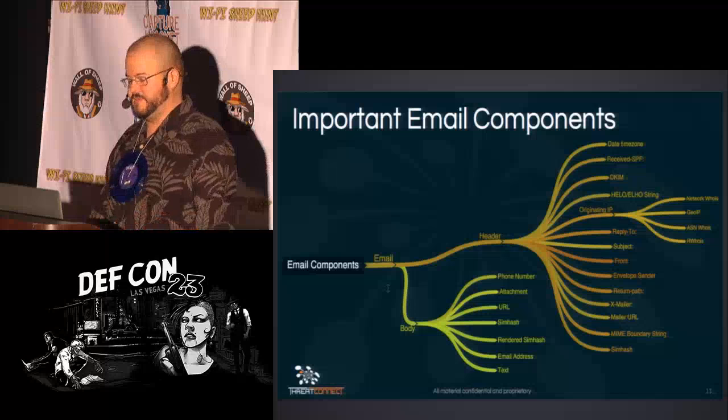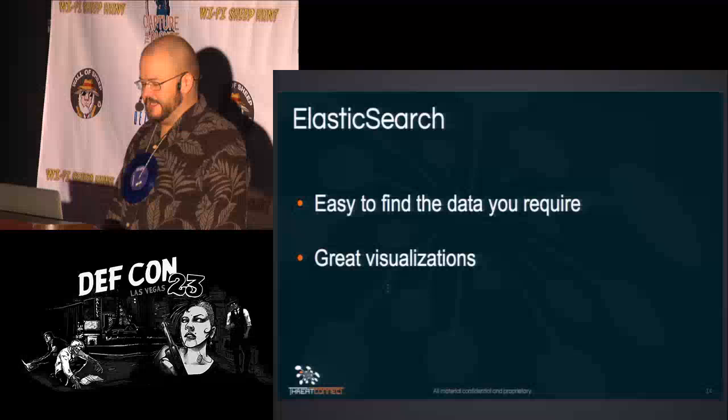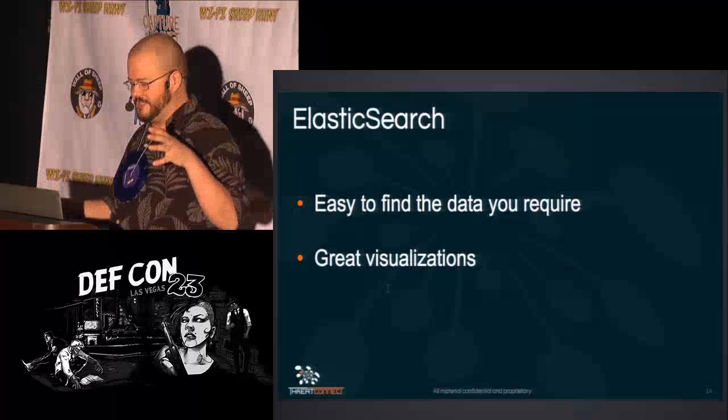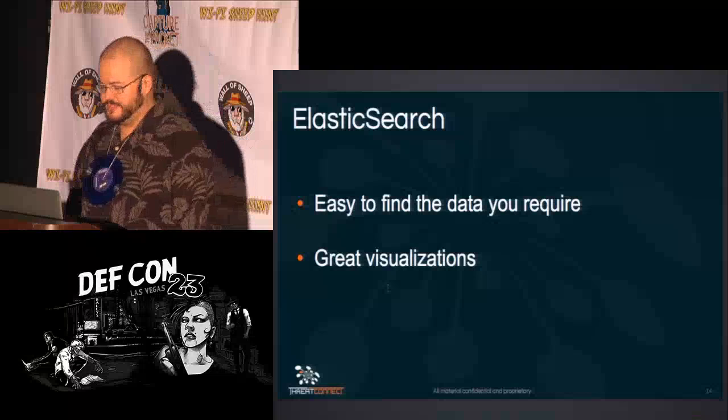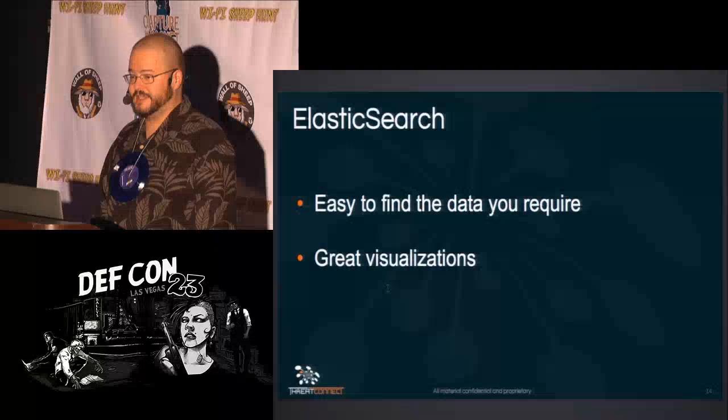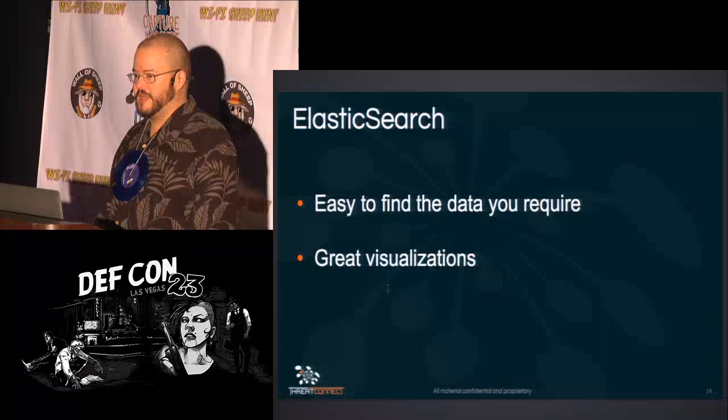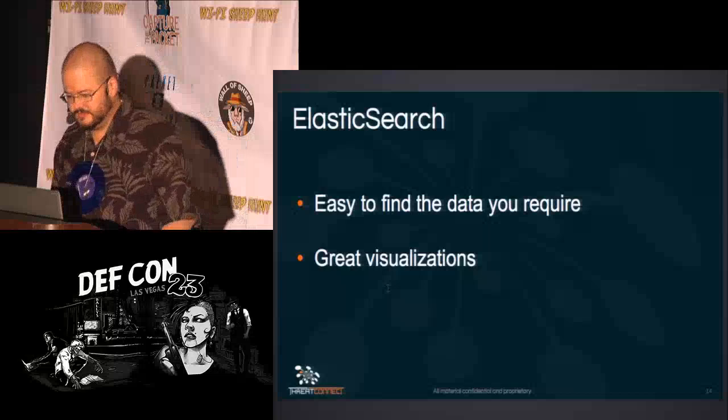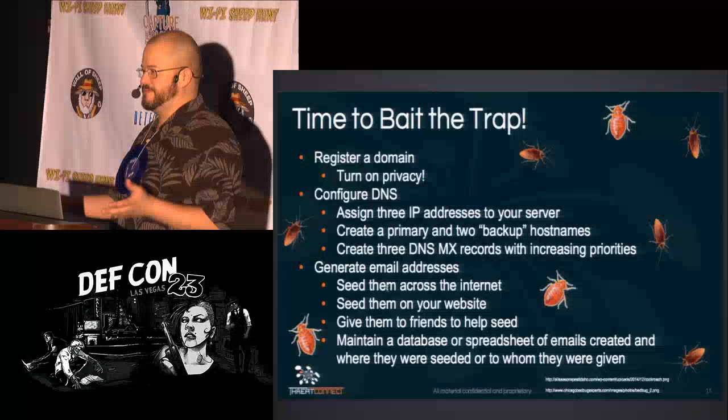After generating the JSON blob for the header, put it into Elasticsearch — create an index, set the type. I call it 'email' as the type and 'emails' as the index. Then you can use Kibana to do visualizations on the data you've jammed into Elasticsearch.